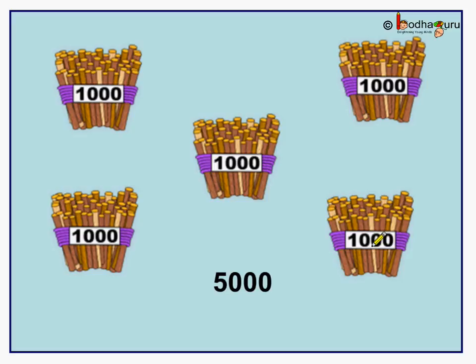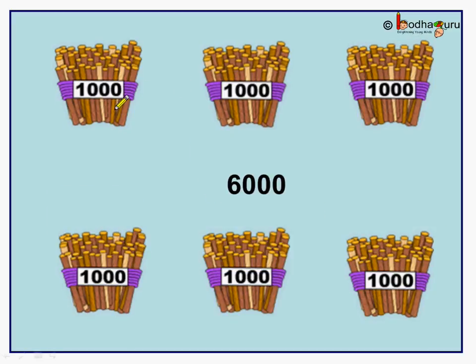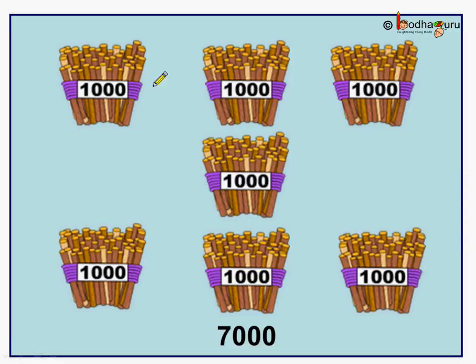Correct, children. Now we have one, two, three, four, five, six — six bundles of thousand and it is equal to six thousand. Next, we have one, two, three, four, five, six, seven — seven bundles of thousand and it is equal to seven thousand.